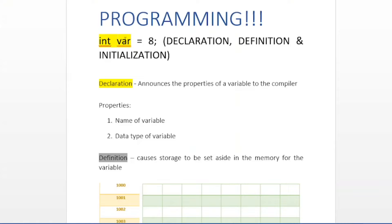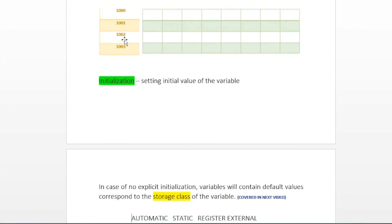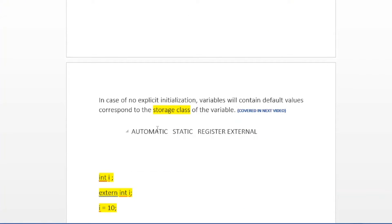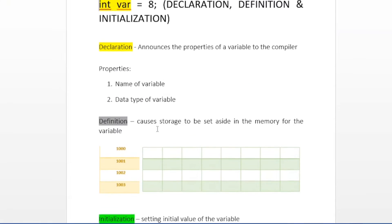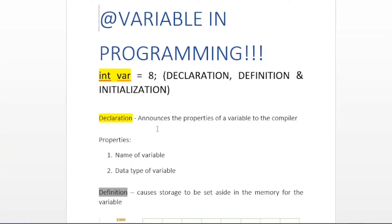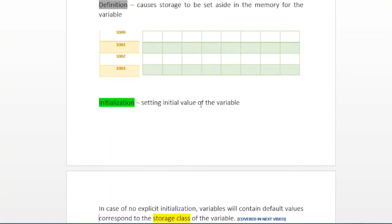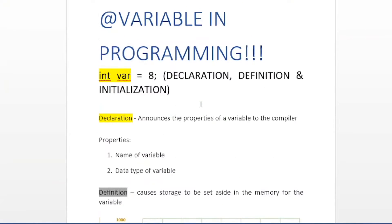Now, there is a concept of storage classes for variables. We have four storage classes for variables in C: automatic, static, register, and external. I will be covering storage classes in the next video. But for the sake of understanding this video and the meaning of all three, remember that whenever you declare something inside a function or a block, the default storage class will be automatic.